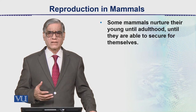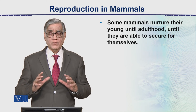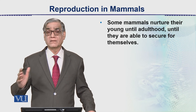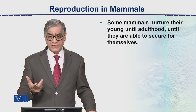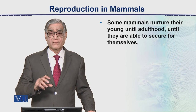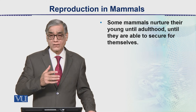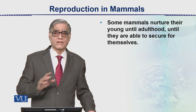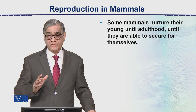Some mammals nurture their young till adulthood, until they are able to secure for themselves. For humans, there is postnatal development and prenatal development. Prenatal is before the birth of the child. Postnatal: the newborn is called a neonate, then after one year becomes an infant, then after three years becomes a toddler — that starts crawling on the ground — then the pre-school stage up to five years, and then school-going. These are the five different stages after the birth of the child.